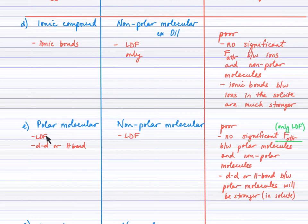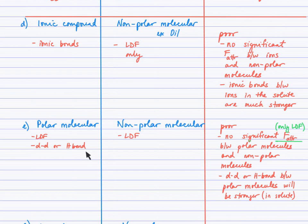Polar molecules have the ability to London dispersion force as well as dipole-dipole or possibly hydrogen bond, whereas our non-polar solvent has the ability only to London attract. So we would expect the solubility between these two particles to be poor. The polar molecules and the non-polar molecules are only going to experience London forces between them, and so the hydrogen bonding or dipole-dipole forces between the solute particles are much stronger — therefore the solute particles will stay together rather than dissolve.